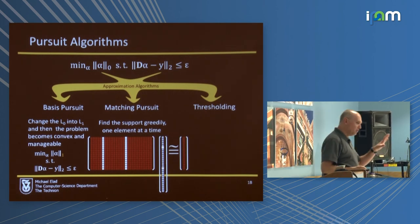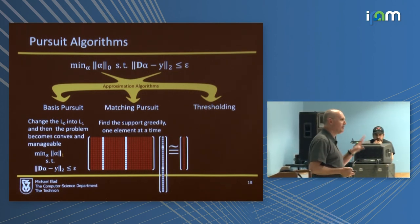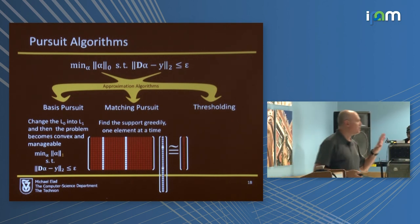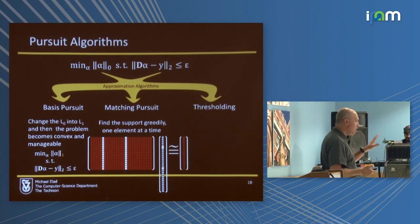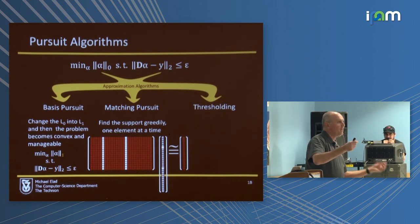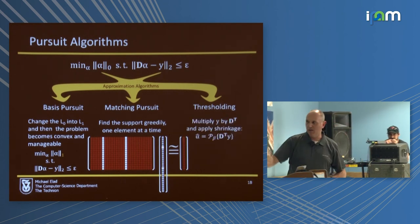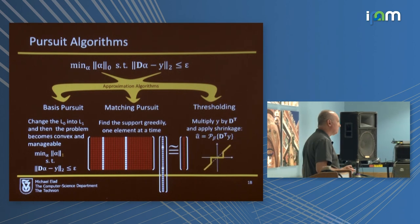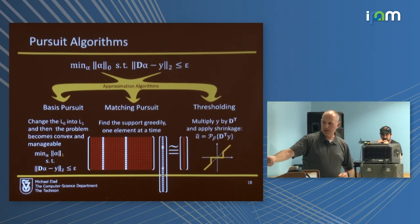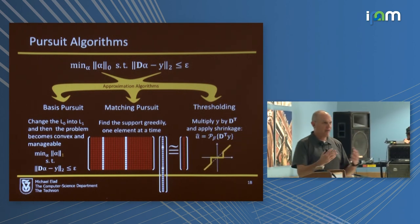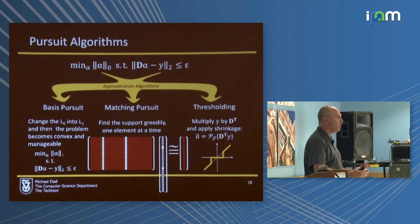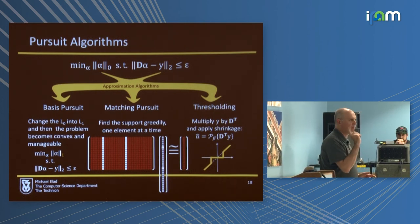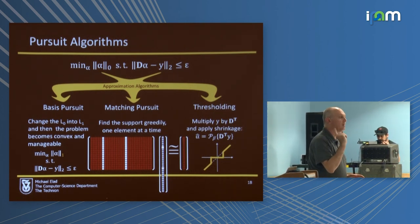Thresholding is the dumbest algorithm you can imagine. It is a matched filter — that's it. You take y, do inner product with all the atoms — basically D-transpose times y — and then threshold. Those values that are too small, null to zero; the rest, just let them be. This is thresholding. Remember it: the simplest algorithm. We will come back to it.